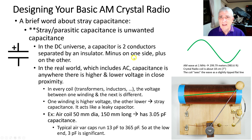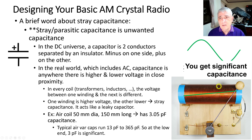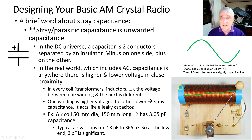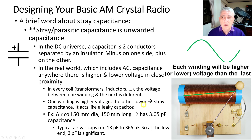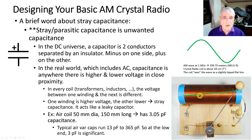A capacitor is simply two conductors at different voltages separated by a gap. Each turn of wire has a slightly different potential than the next turn, and when you add all these up you end up with capacitance. In every coil, transformer, or inductor, the voltage between one winding and the next is different, so you get stray capacitance. It acts like a leaky capacitor — at higher frequencies it's not fully shorted because of the time it takes for the wave to pass through, so it still looks like a capacitor to the radio.